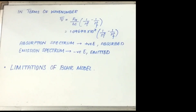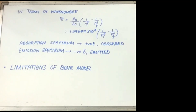The Bohr model fails to account for the finer details of the hydrogen spectrum. One such detail is the doublet — two closely spaced lines — observed using sophisticated spectroscopic techniques. It is also unable to explain the spectrum of atoms other than hydrogen, the splitting of spectral lines in the presence of a magnetic field (the Zeeman effect), the splitting in the presence of an electric field (the Stark effect), and the ability of atoms to form molecules by chemical bonds.